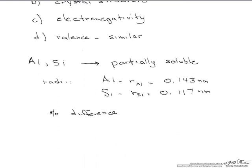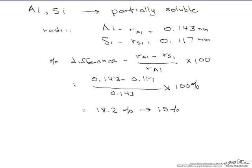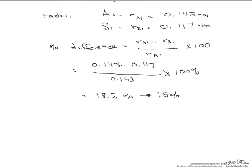Let's see what the percent difference is. We look at the radius of the aluminum minus the radius of the silicon, divided by the radius of aluminum, and multiply that by 100. The percent difference is 18.2 percent, which is greater than that 15 percent difference. That automatically tells you that you are going to have partial solubility.